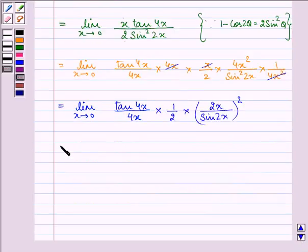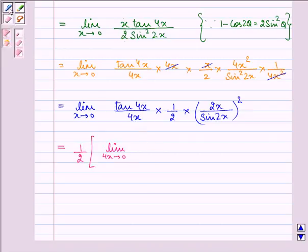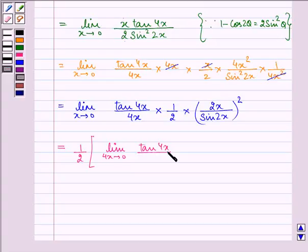So now separating out the limit we have 1 by 2 into—limit when x approaches to 0 then 4x also approaches to 0. So we have limit 4x approaching 0 tan 4x upon 4x, times 2x upon sin 2x.